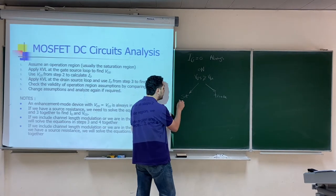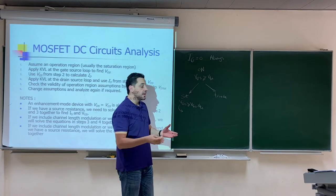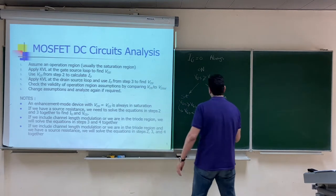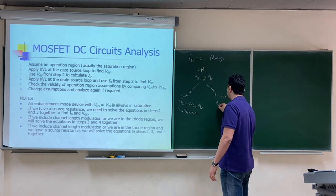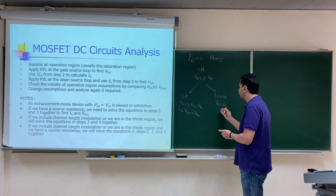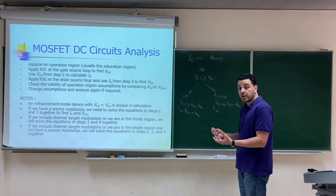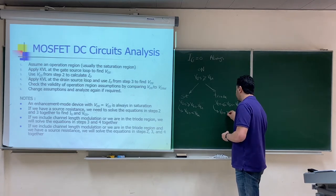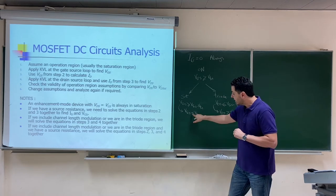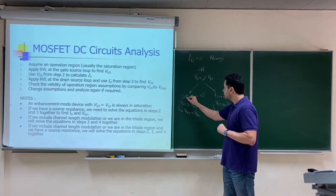If the transistor is on, it can be in saturation or triode. For saturation, you need VGS to be greater than VGS minus V_threshold, or equivalently VGD less than V_threshold. For the triode region, you need VDS to be less than or equal to VGS minus V_threshold, or equivalently VGD greater than V_threshold. VGD greater than V_threshold means the channel is open towards the drain, so we are in triode. When the channel is closed towards the drain, we are in pinch-off, which is the same as saturation.